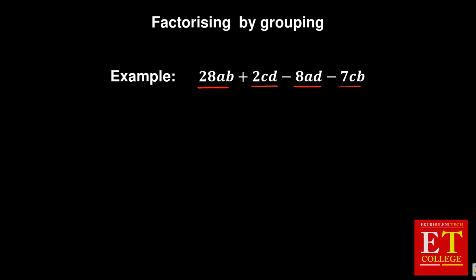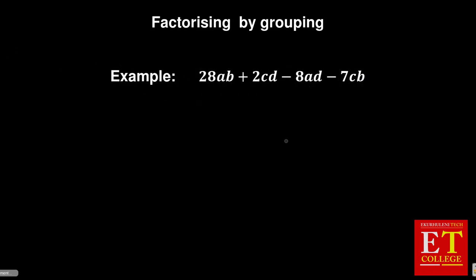Whenever they are talking about factorizing by grouping, the first thing that you need to identify is what is common in the terms. Now because we are given four terms, the main thing is to group them into two parts. You take the first two as well as the last two and identify what is common in these.